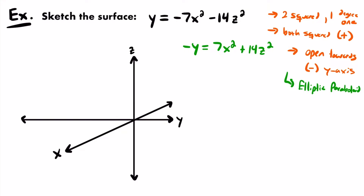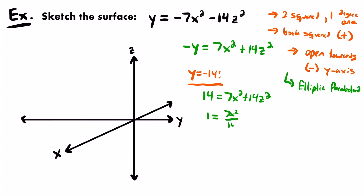Pick a value of y that's nice to work with when forming your ellipse equation. Notice that we have coefficients 7 and 14, and a common multiple is 14. So I'll use y = -14. When y = -14, we get: 14 = 7x² + 14z² (since two negatives cancel). Dividing both sides by 14 gives: 1 = 7x²/14 + 14z²/14, which simplifies to x²/2 + z² = 1. That is an ellipse with x-intercepts of ±√2 ≈ ±1.4 and z-intercepts of ±1.